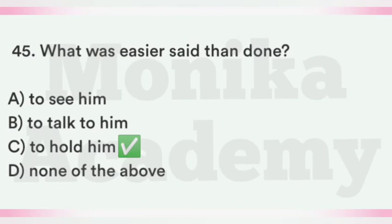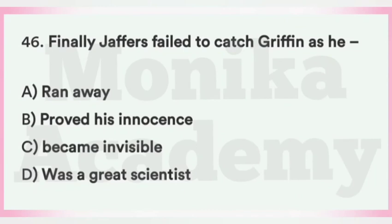Question 46: Finally Jeffers failed to catch Griffin as he ___. Option A: Ran away. Option B: Proved his innocence. Option C: Became invisible. Option D: Was a great scientist. The correct answer is C, became invisible — Jeffers जो है वो Griffin को पकड़ने में इसलिए fail हो गए क्योंकि Griffin invisible यानि अदृश्य हो गया था.